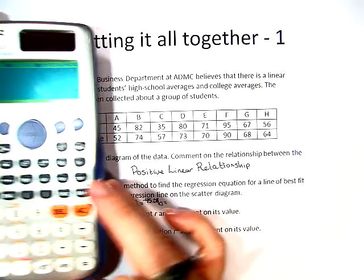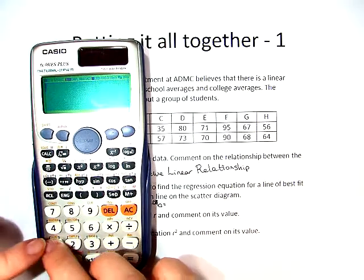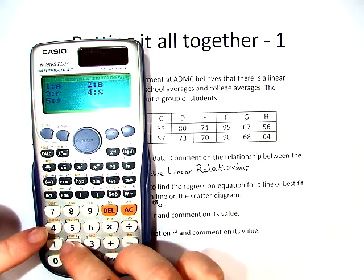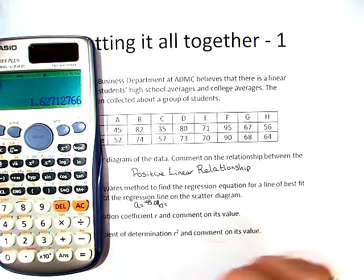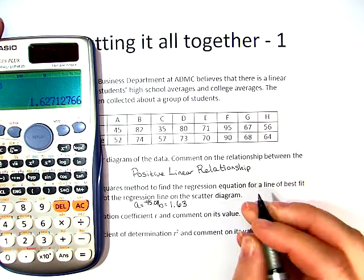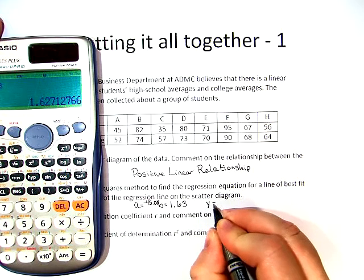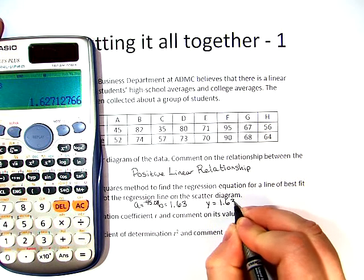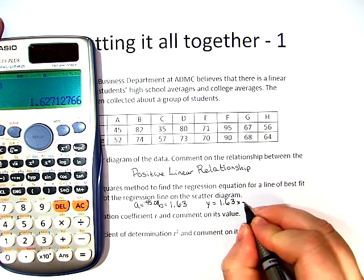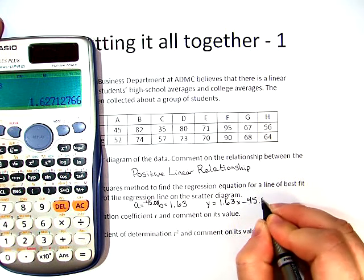Okay, let's go ahead and do b. Shift 1, 5, and choose b. And we get 1.63. So we have y equals 1.63x minus 45.08.